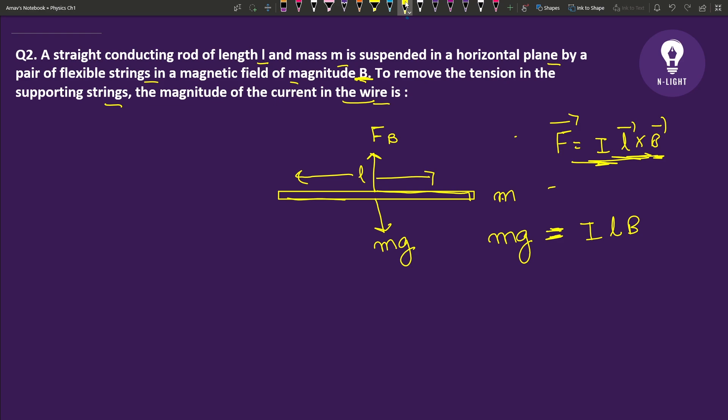The force on wire due to magnetic field, this FB, should equal mg. The rod is to be removed, so mg is equal to force on current carrying wire ILB.